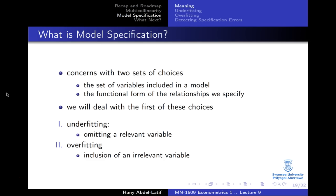When we talk about model specification, we could be talking about one of two things: we could either be talking about the set of variables that we need to include in a given model, or we could be talking about the functional form that represents such a relationship.